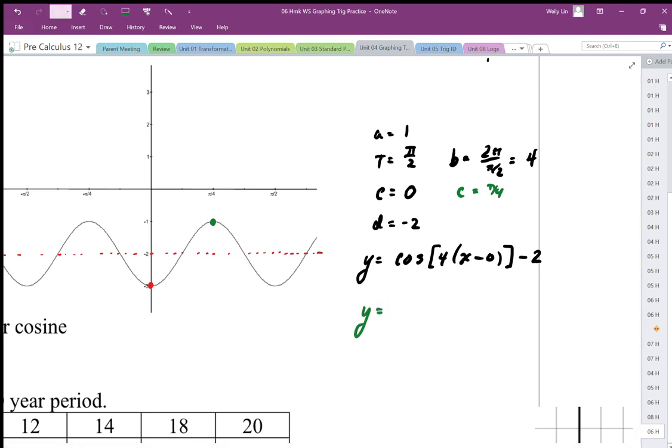I forgot to do the negative cosine in the last one. So this is an upside down cosine starting at the minimum. If it's a positive cosine,